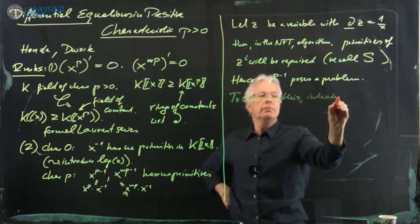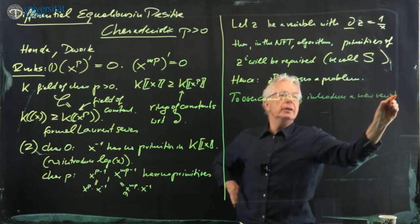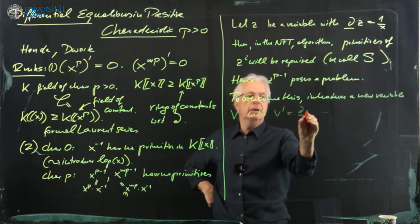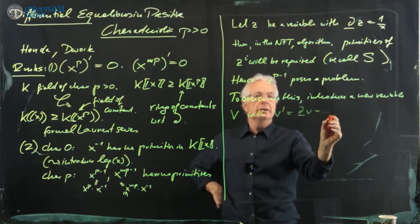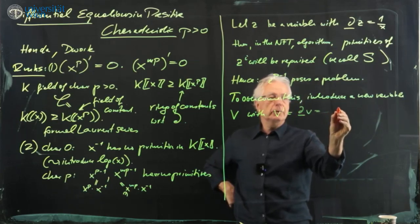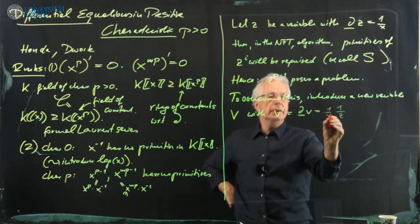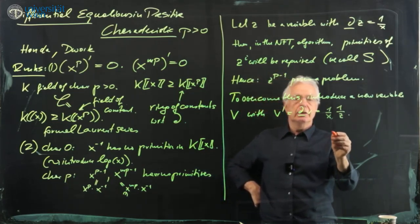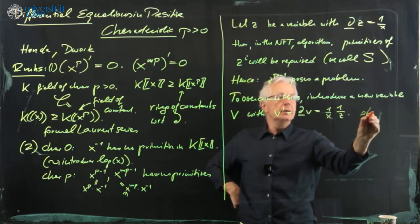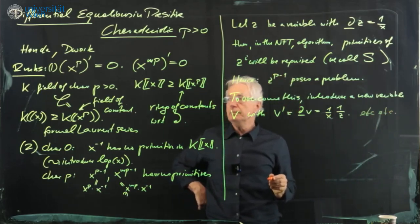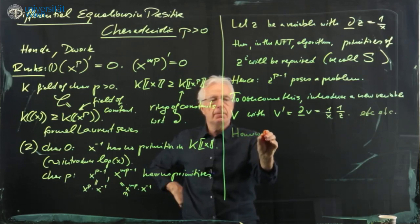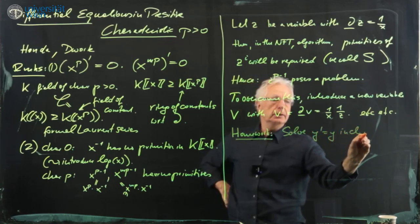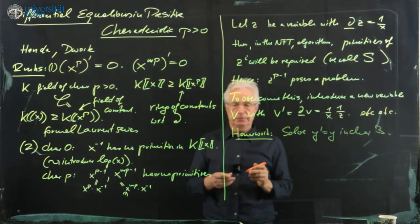To overcome this, introduce a new variable v with ∂̄(v) = 1/(x·z). This gives a primitive also for z^{p−1}. But then for v the same problem occurs, so you have to introduce infinitely many variables. Homework, if you want: solve y' = y in characteristic 3. Thank you very much, see you next week.